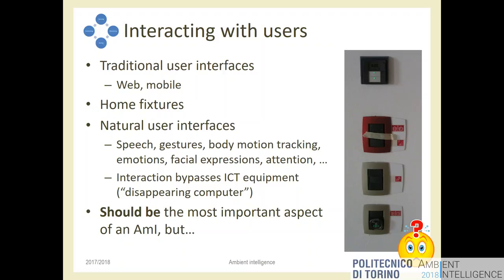We don't need something looking like Star Trek to make a home more intelligent. We just need the behavior of the system to be better and the interaction to remain easy. Computers should disappear as much as possible. The rest of the people — not computer engineers — don't care about computers; they just want things done. If we use computers and hide them, acceptance will be higher.